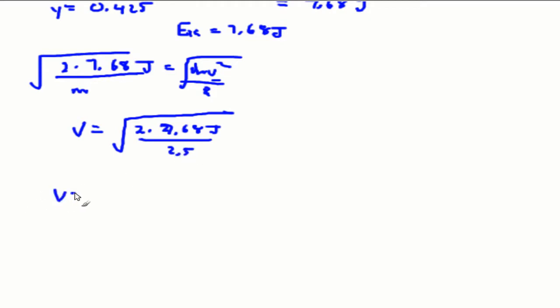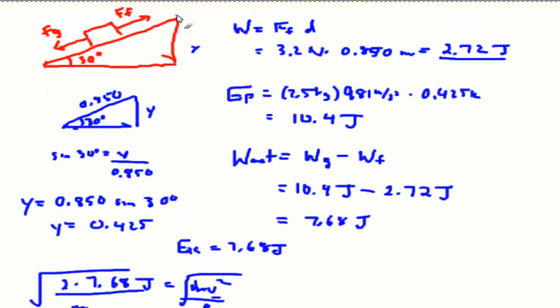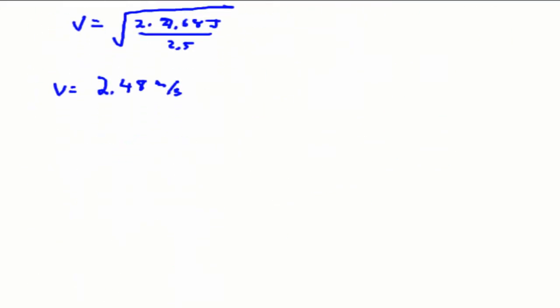So the velocity will be equal to 2.48 meters per second down the angle. So as the potential energy of the object from the top decreases, kinetic energy will increase to give us a final velocity of 2.48 meters per second.